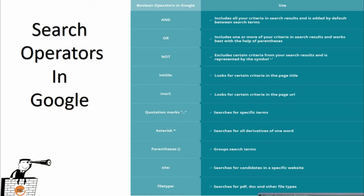Now let's understand Google search operators. On the right-hand side you can see Boolean operators. In Google we have: AND, OR, NOT, intitle, inurl, quotation marks, asterisk, parentheses, site, and filetype. AND is used for all criteria in the search result and is added by default between search terms. OR is used for one or more criteria. NOT is used for excluding certain criteria. Intitle is used for certain criteria in the page title, and inurl for criteria in the page URL.